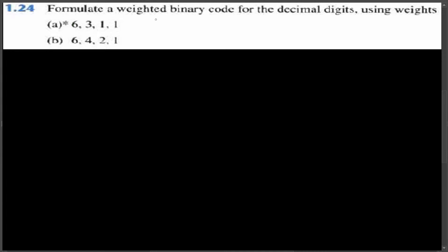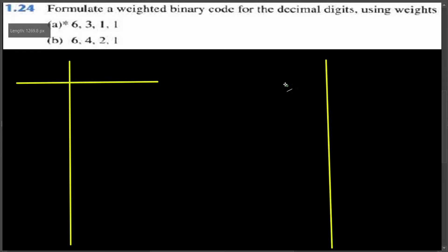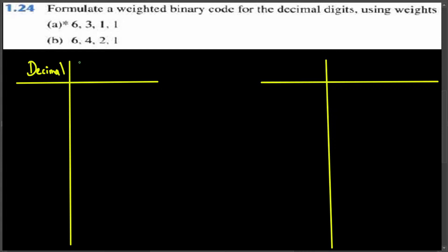This question is asking us to formulate a weighted binary code for the decimal digits using weights 6-3-1-1 and 6-4-2-1. Let's make a table for it. For the first one, we are going to have the decimal value and write the conversion of the decimal value based on the given weights — the weighted binary code.